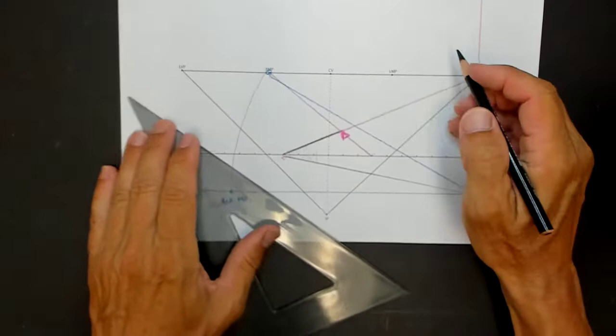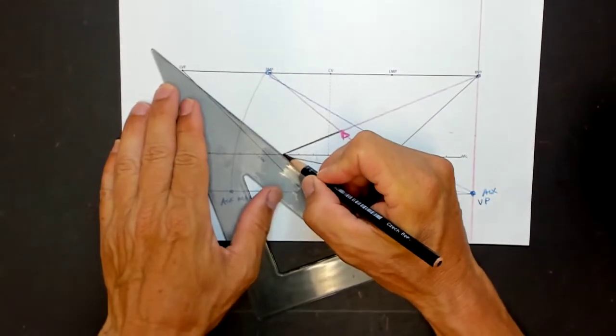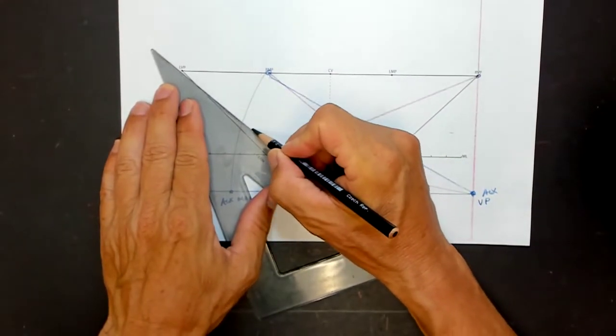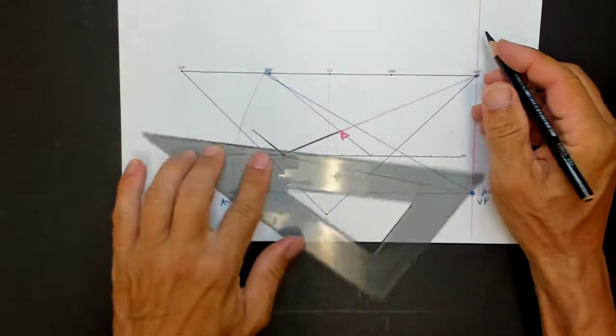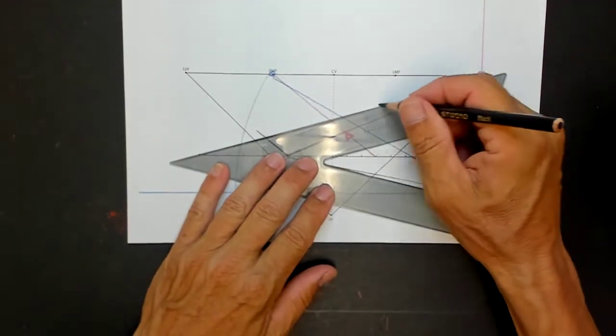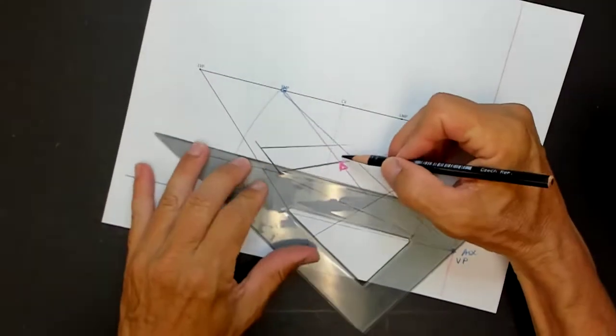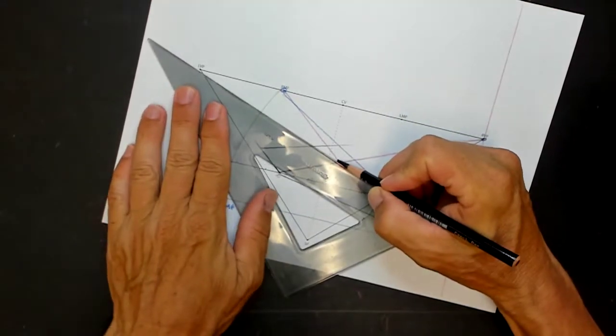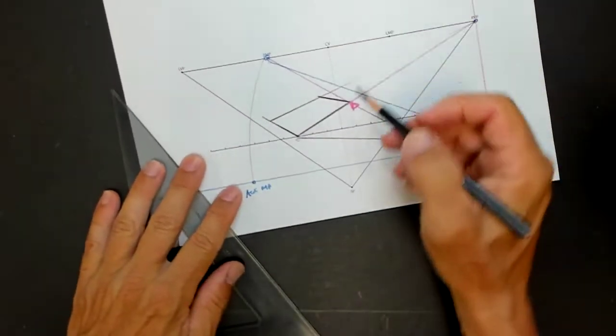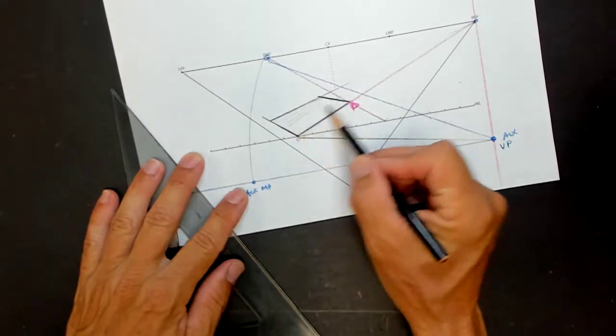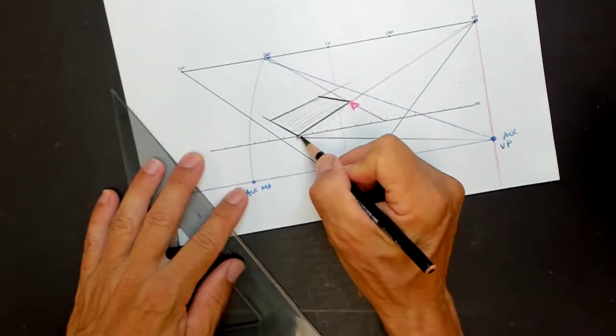I should maybe make this thing into a three-dimensional shape so you could see it better. Here's just a random rectangle sitting on the floor. Here's the hinge.